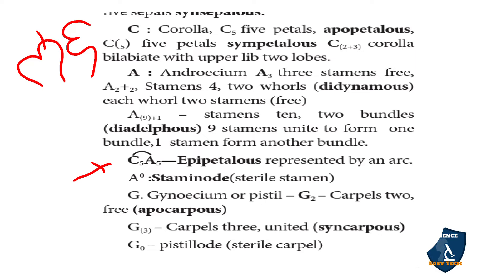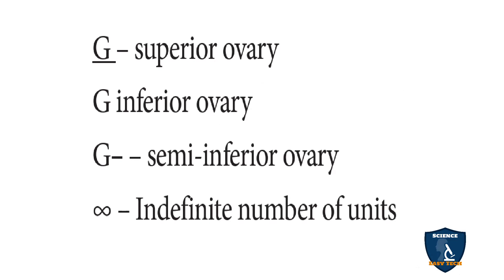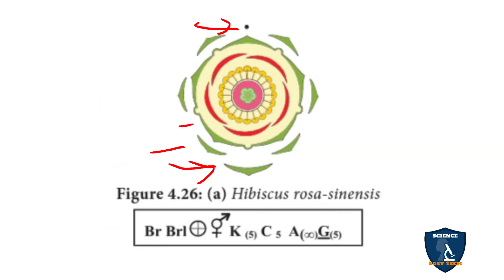Gynoecium or pistil is represented by G. G2 with free carpels means apocarpous. G(2) or G(3) with the number inside brackets means syncarpous — fused carpels. G0 means pistillode — sterile carpel. If the line is below G, the ovary is superior. If the line is above G, it is an inferior ovary. If the line is in between, it is a semi-inferior ovary. The infinity symbol represents an indefinite number of units.